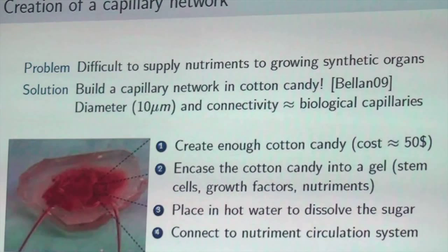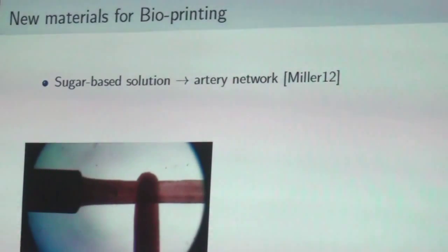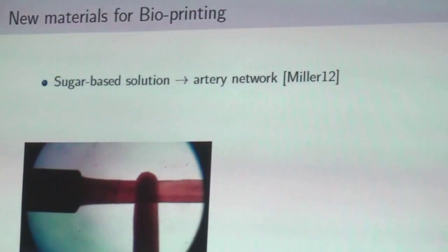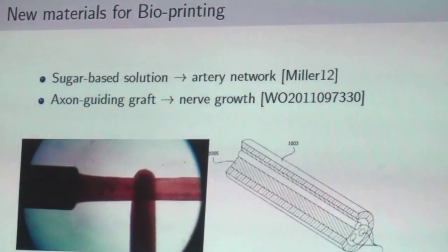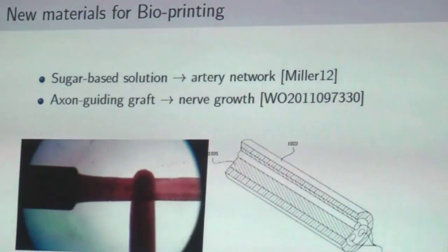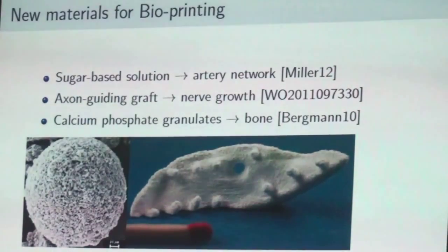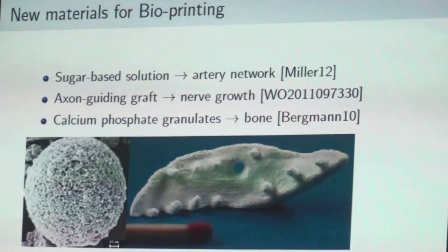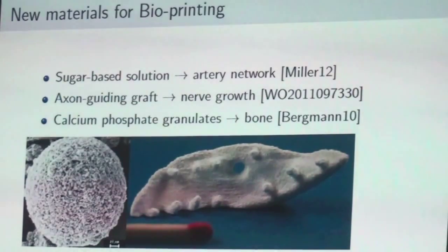This cotton candy technique can be applied to 3D printing — we can print arteries and blood vessels with a sugar-based solution. We can also create with 3D printing axon-guiding grafts that will help nerves to grow from your body into the new organ. You can also create bones with granulates made of the same materials as natural bones. So we can now 3D print arteries, muscles, nerves, and bone — we have almost everything needed to print a complete organ in one go.